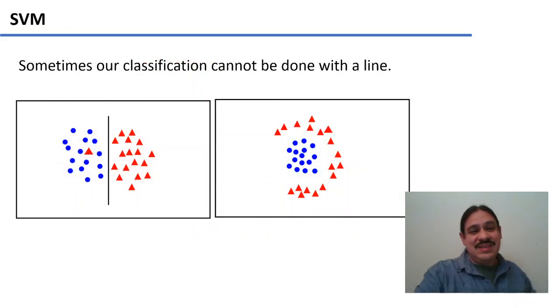What's really interesting is if we cannot use a line to separate our blobs. So the situation we have on the left is the one that we've been discussing, where you can draw a line, and every now and then, a triangle is going to be on the circle side, on the blue circle side. And so it's going to get misclassified as a blue circle, and we make that sacrifice. But the two groups are still clearly separate, and they can be separated by a line.